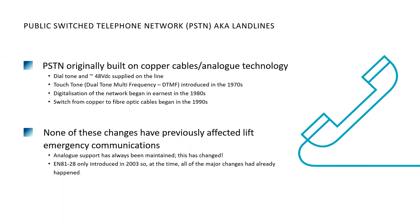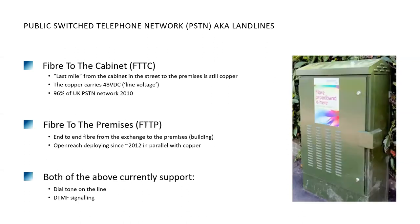EN8128, the European standard covering lift emergency telephones, was only introduced in 2003, so at the time it was introduced, all of the major changes on the network had already happened. However, what we are now entering is a period of sustained and major change. Two key terms: fiber to the cabinet, where fiber runs from the exchange to street cabinets and then copper for the last mile to premises; and fiber to the premises, where we have an end-to-end fiber run all the way to the building.